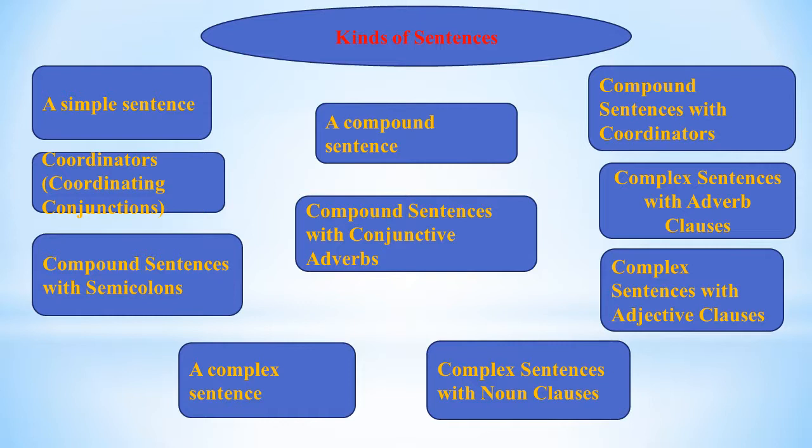A compound sentence is two or more independent clauses joined together. There are three ways to join the clauses. First, with a coordinator — for example: 'Salt water boils at higher temperatures than fresh water, so food cooks faster in salt water.' Second, with a conjunctive adverb: 'Salt water boils at a higher temperature than fresh water; therefore, food cooks faster in salt water.' Third, with a semicolon between the sentences.